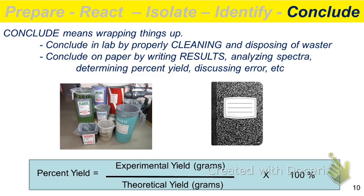One more thing about percent yield: why might you have to recalculate the theoretical yield at the end of class? Your theoretical yield is dependent on how much you started with. When you calculate it before lab, you're going based on what the lab manual tells you. What are the odds you get exactly that amount? Probably not great — which means your theoretical yield will also change, so you may have to recalculate it at the end of class.